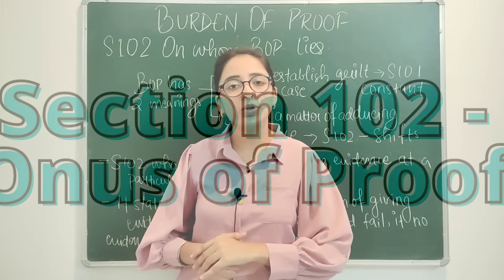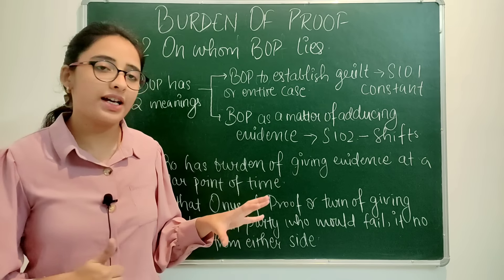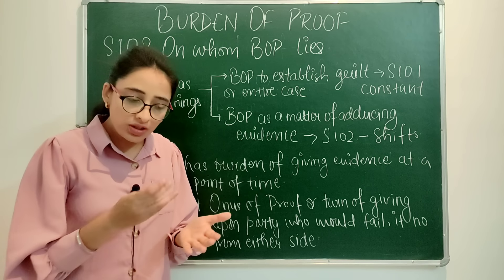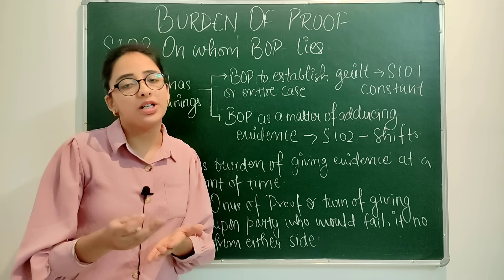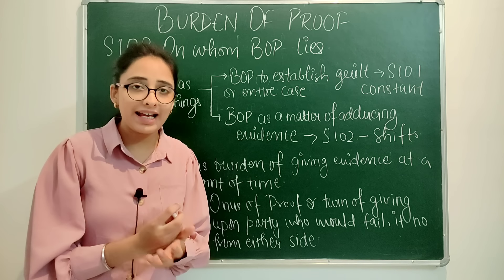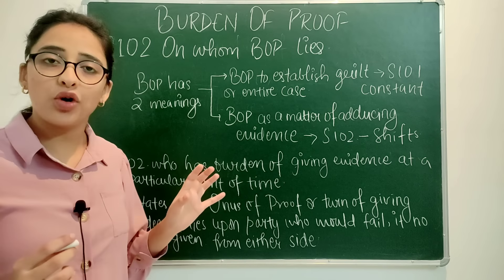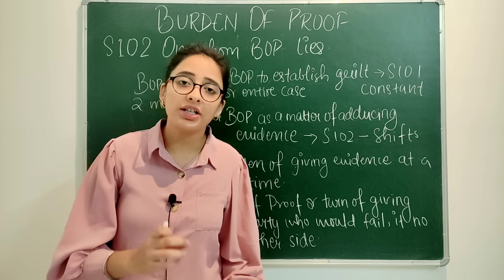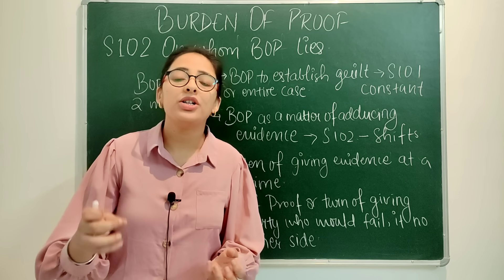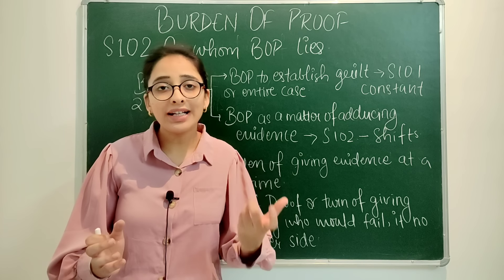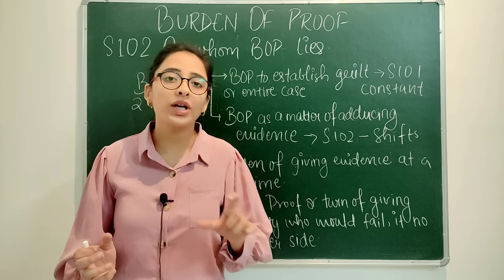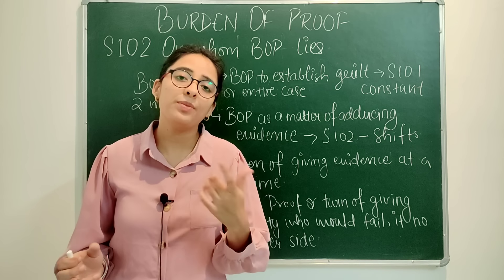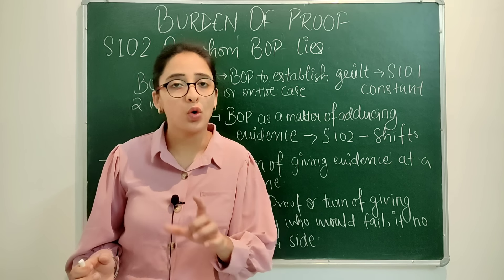Let's talk about section 102. Section 102 says 'on whom burden of proof lies' — at a particular point of time during a case, on whom does the burden of proof lie? It attempts to locate which party at that particular point bears the burden of proof.